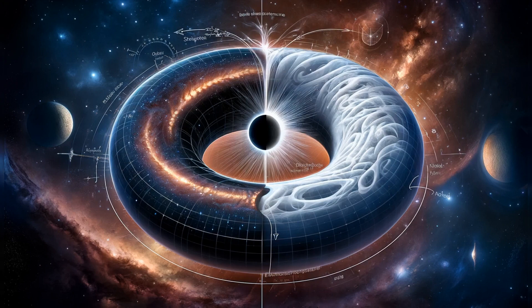Metaphysically, the Torus embodies the cyclical nature of existence, representing the continuous flow of energy between the spiritual and material realms. Just as the Torus loops back upon itself, symbolizing eternal recurrence, it reflects the perpetual journey of consciousness oscillating between the unmanifested and manifested states.